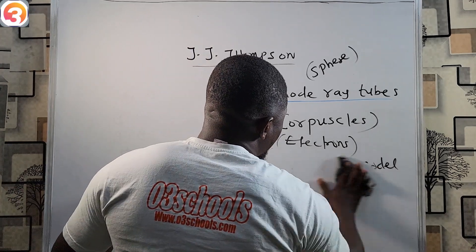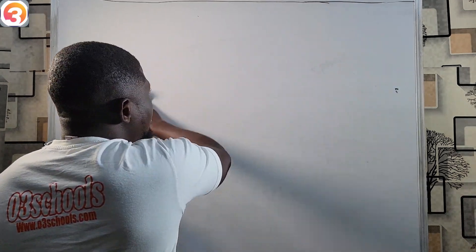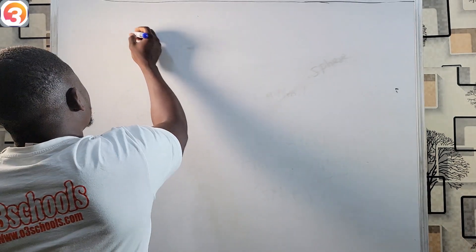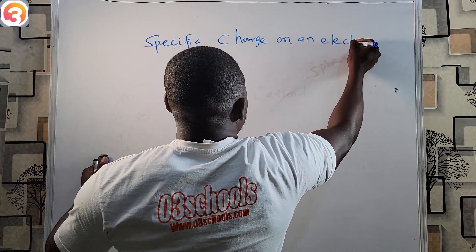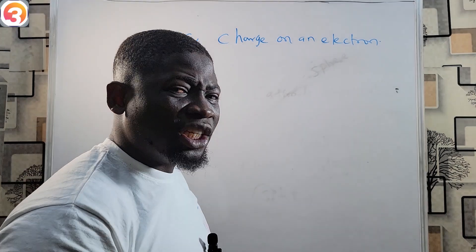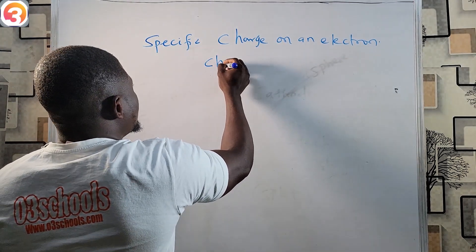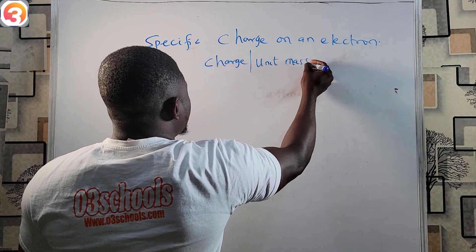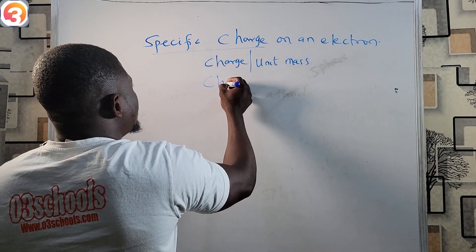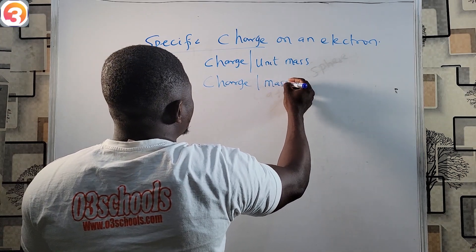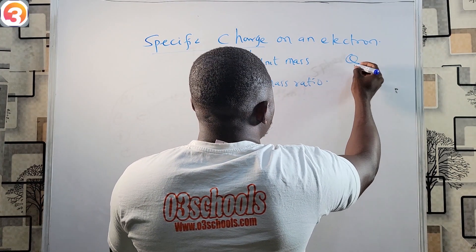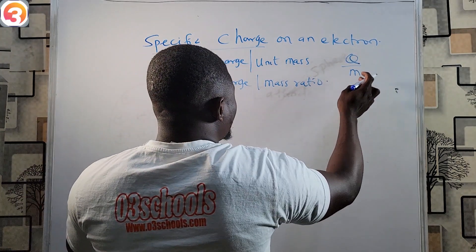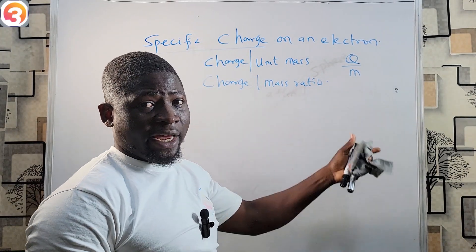JJ Thompson was able to measure the specific charge on an electron. Specific charge means charge per unit mass — it can also be called the charge-to-mass ratio. If charge is represented by Q and mass by M, then the charge-to-mass ratio is Q over M.